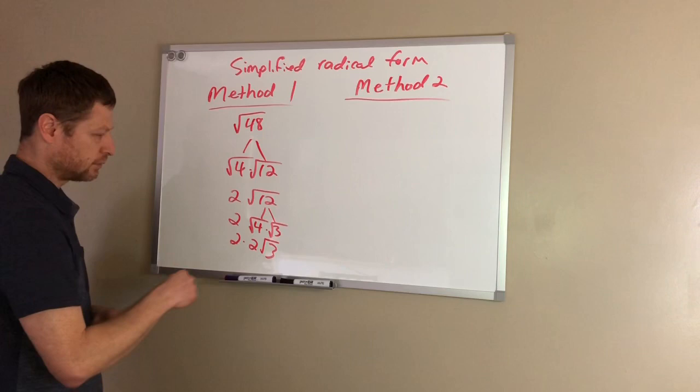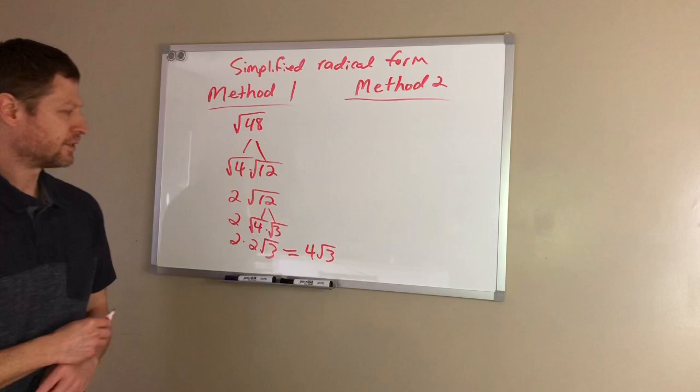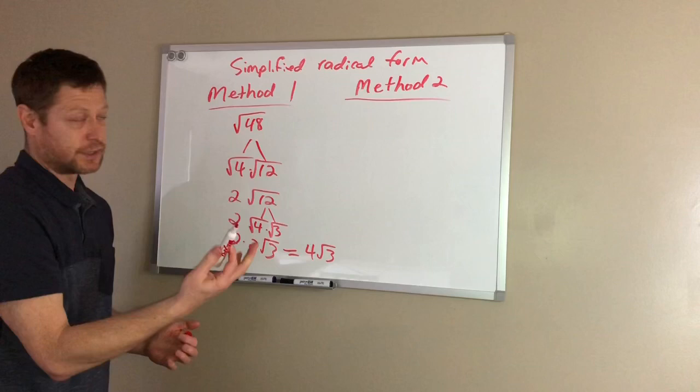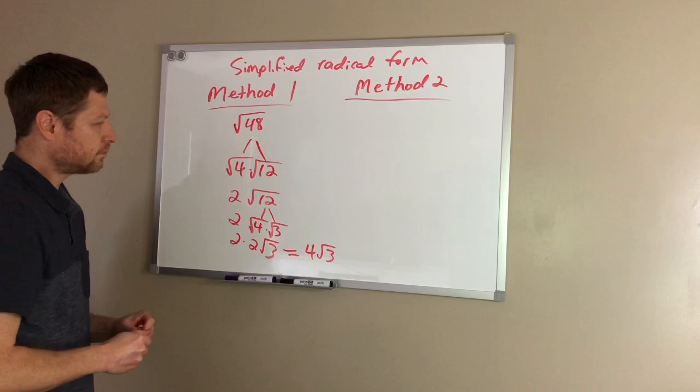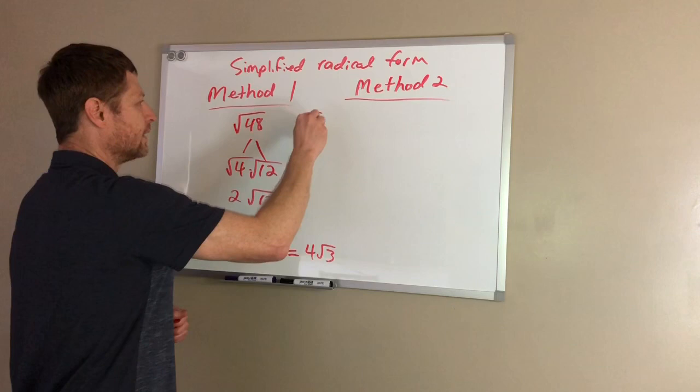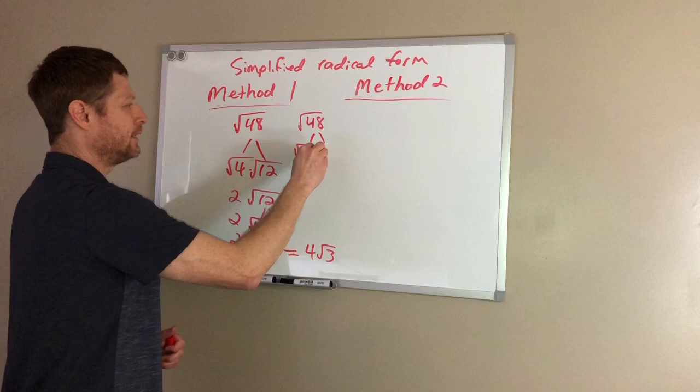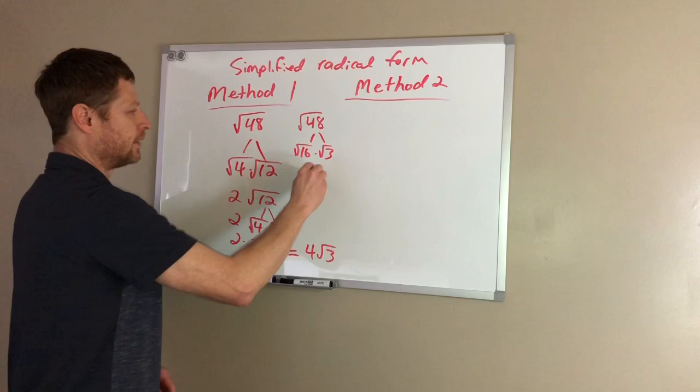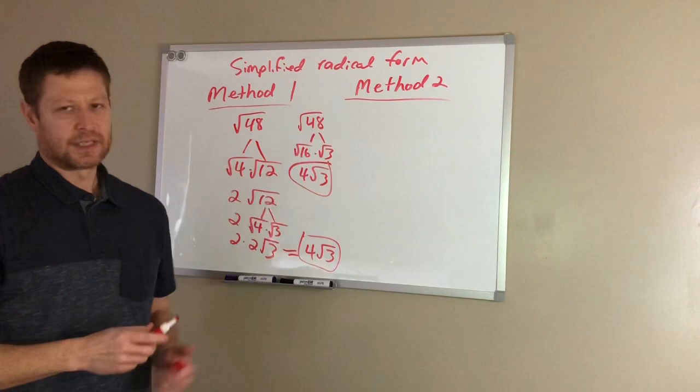Now that, of course, is the long way because I didn't realize—well, we pretended we didn't realize that there was a larger perfect square here to begin with. So, of course, the shorter way is to realize from the beginning that you can take a 16 out of that. So it's 16 times 3, the square root of 16 times the square root of 3, which is 4 square roots of 3. You can see the same answer, but this time realizing that there was a larger perfect square. So it's a nice, quick, easy method as long as you're able to find the largest perfect square that goes inside.